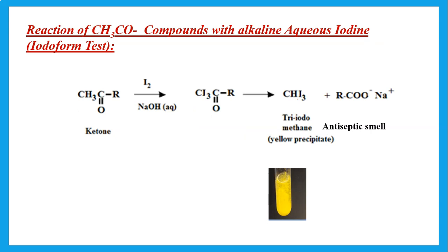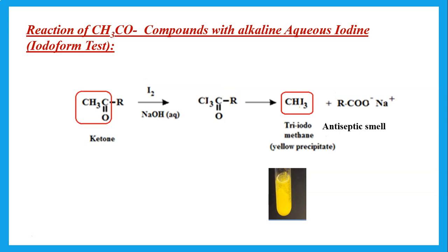Another reaction is the iodoform test for methyl ketones. If we have a compound with CH₃C=O — which could be a ketone or an aldehyde — we react it with iodine in aqueous sodium hydroxide (aqueous base). This gives a yellow precipitate with an antiseptic smell, confirming the presence of the CH₃C=O group. The yellow precipitate is due to the formation of CHI₃ (iodoform).